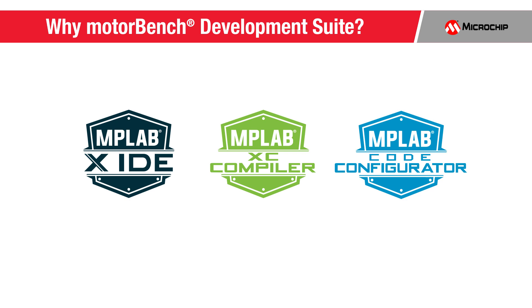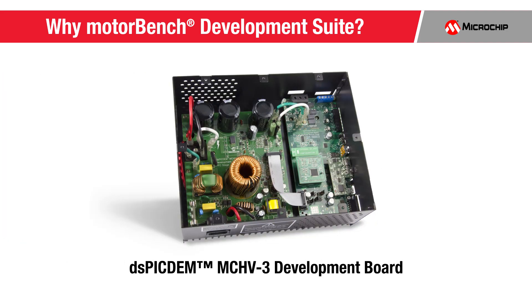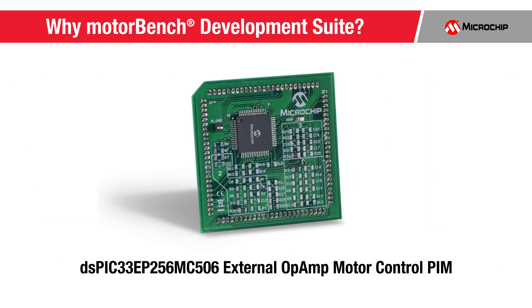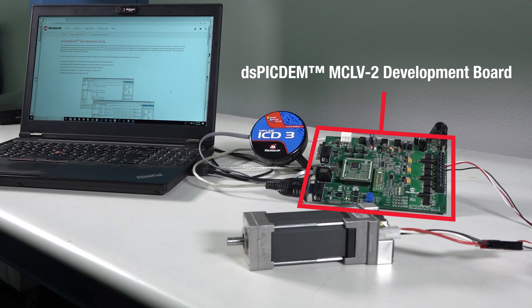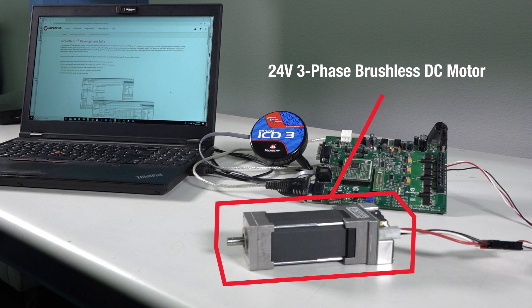It works in conjunction with Microchip's motor control development tools like the DSPIC-DIMM MCLV2 Development Board for Low-Voltage Motors, the DSPIC-DIMM MCHV3 Development Board for High-Voltage Motors, and the DSPIC33EP256MC506 Digital Signal Controller Based External Op-Amp Motor Control Plug-in Module, and this 24-volt, three-phase, brushless DC, permanent magnet, Hurst motor.